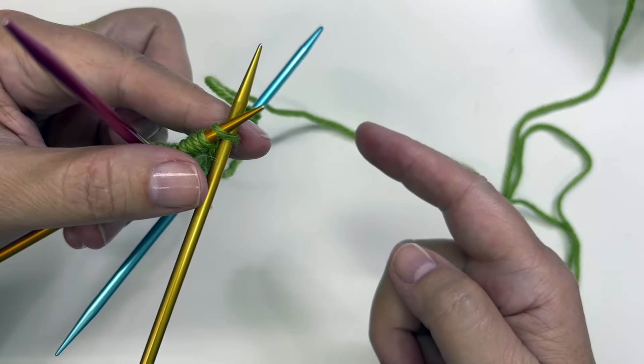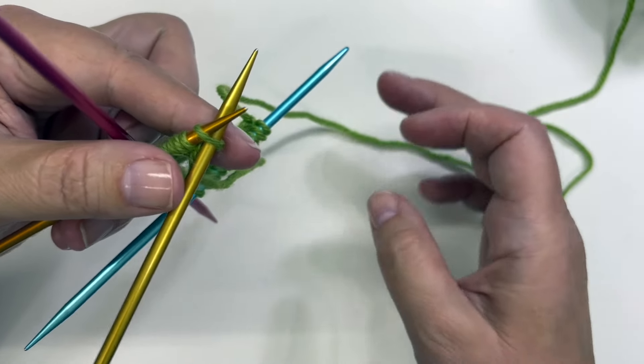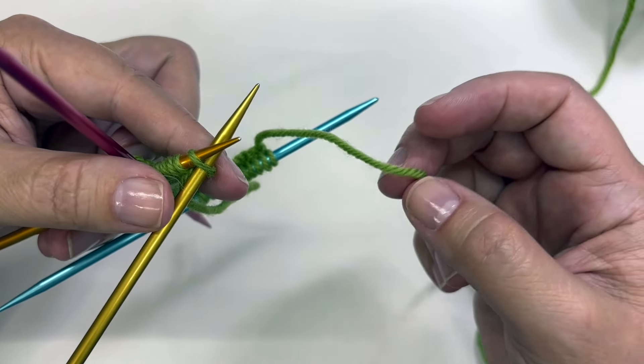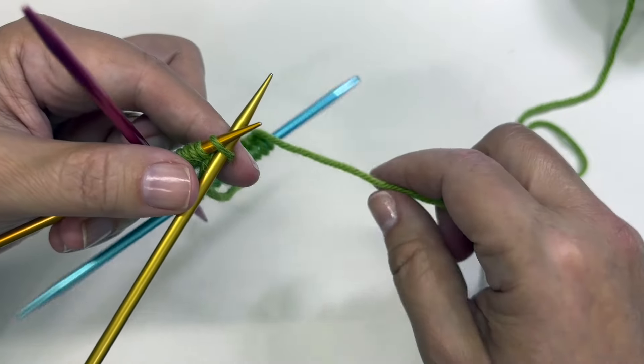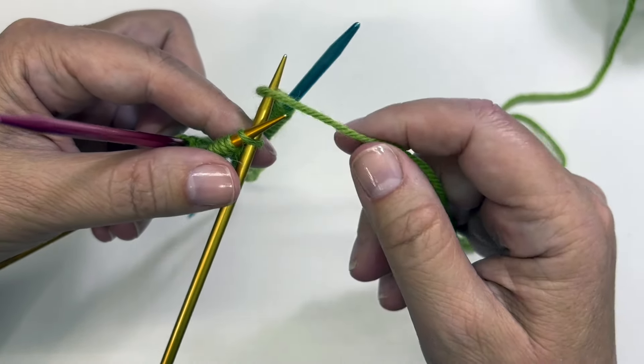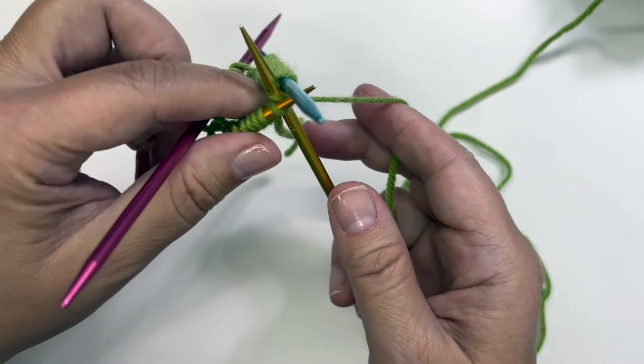I'm going to take my other DPN and I'm going to park it in that first stitch. Notice I'm not holding on to the rest of the needles, they're just dangling here. Now I'm going to find the tail end of my yarn that's attached to the ball and I'm going to use it to wrap the yarn around and knit this first stitch.